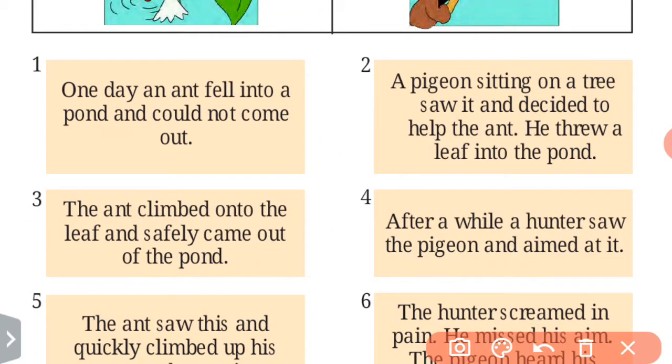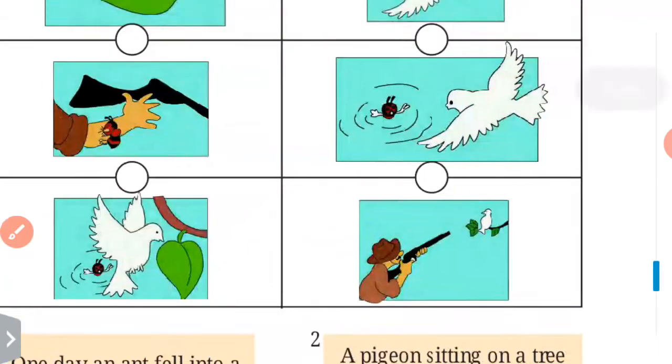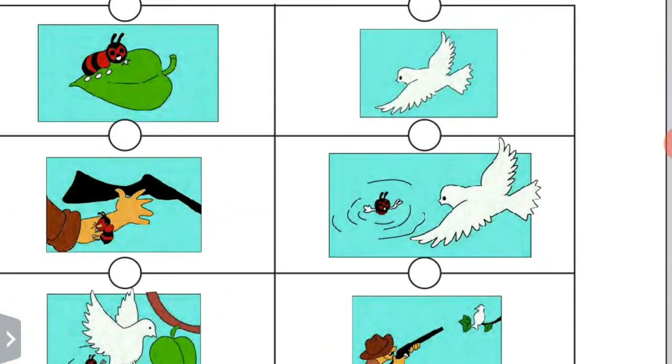So first one is one day an ant fell into a pond and could not come out. See here what is given. One day what happened? One ant fell into the pond and could not come out. So where is the picture? In this picture, so here you have to put number 1.